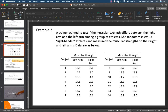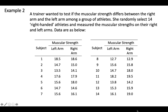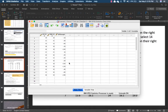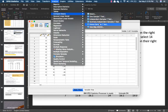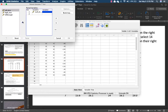Now let's look at the second example. It's very important to see how we resort to a non-parametric test. A trainer wanted to test if muscular strength differs between the right arm and left arm among a group of athletes. She randomly selected 14 right-handed athletes and measured the muscular strength of their right and left arms. We have 14 subjects and 28 observations. Go to Analyze, Compare Means, Paired Sample T, and select left arm and right arm.